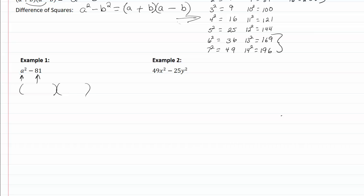Write down your two sets of parentheses. Write down the square root of the first term, the square root of the second term, which is nine. Put plus in one, minus in the other.